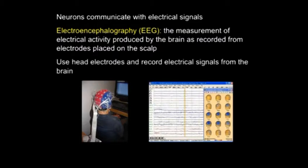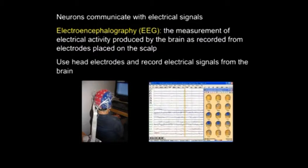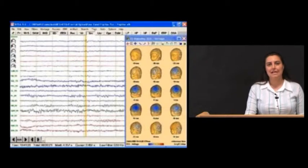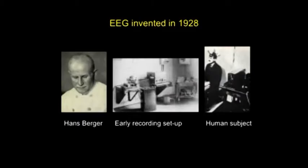We use head electrodes that are mounted on a cap to record the electrical activity from our brain, and that can give us information about processing in the brain. I will explain how we record and how we interpret those recordings. EEG was invented in 1928 by Hans Berger, and Hans Berger was actually the first scientist to record electrical activity from the brain of a living human being.